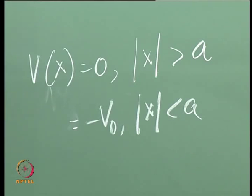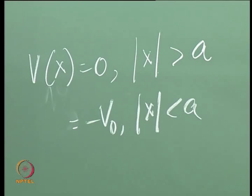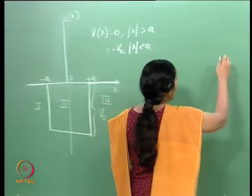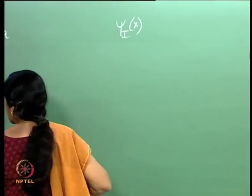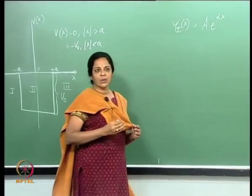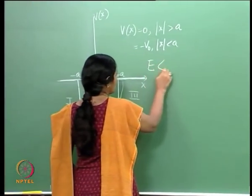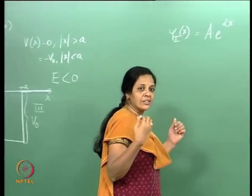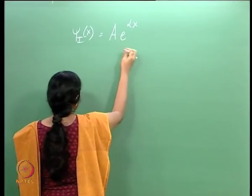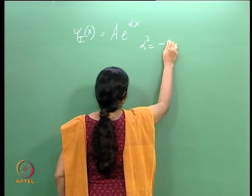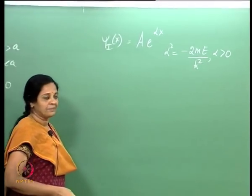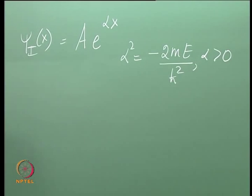We wrote out the wave functions in the 3 regions. Because the wave function has to vanish at spatial infinity, we had psi_1(x) in region 1 as simply A e^(alpha x). We were considering bound states, and therefore it is important to note that the energy was less than 0. The whole idea was to see if classically forbidden regions are accessible in quantum physics.